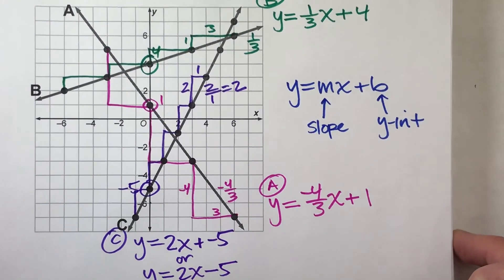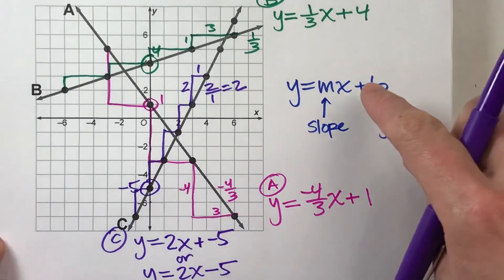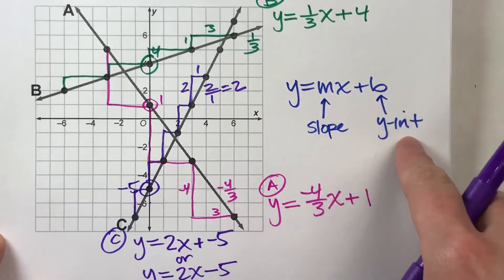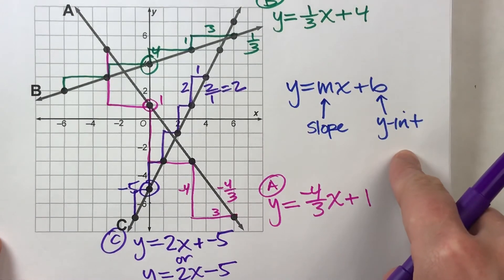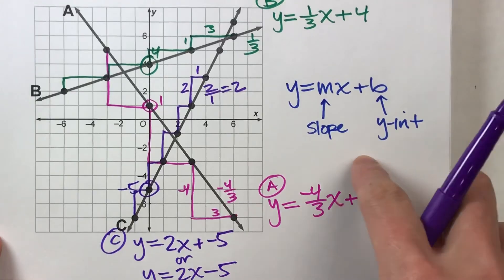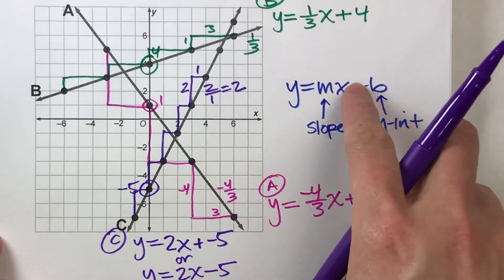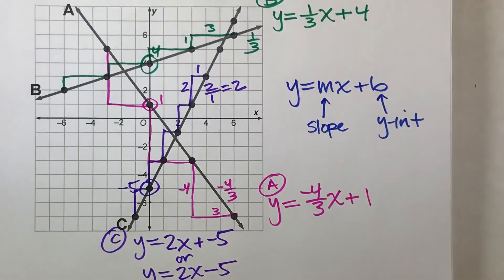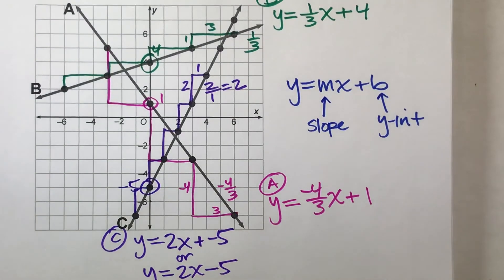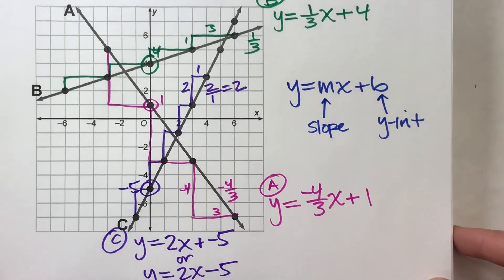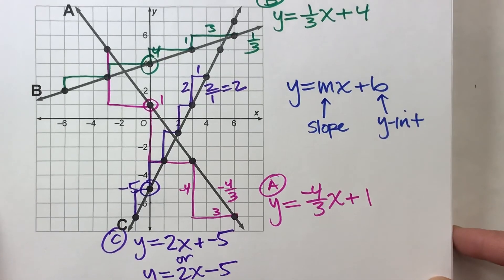That's how you write an equation for a line. Just remember, you're looking for two things: the slope and the y-intercept. Once you get them, you put them in the right spots in the equation and you've got it. If this video helped you out, make sure you hit that like button and subscribe — it really helps us out.